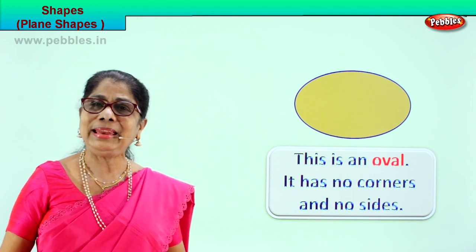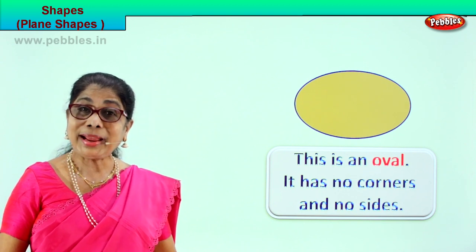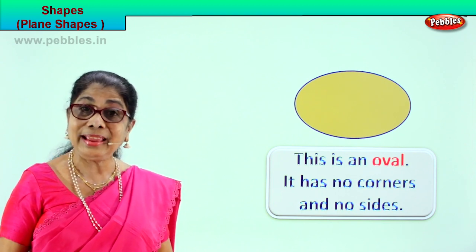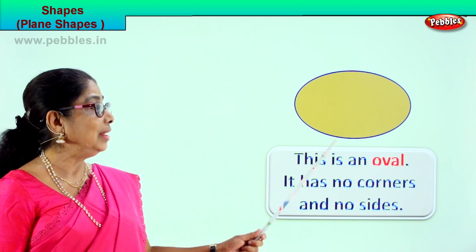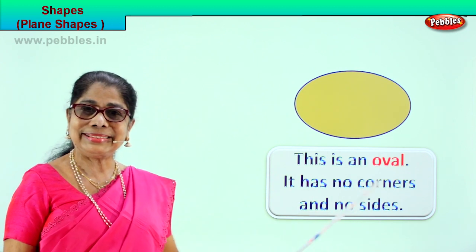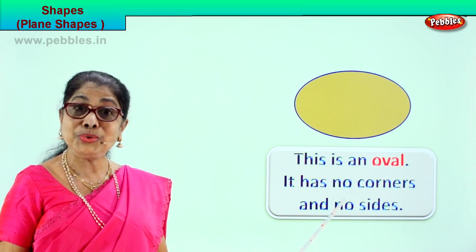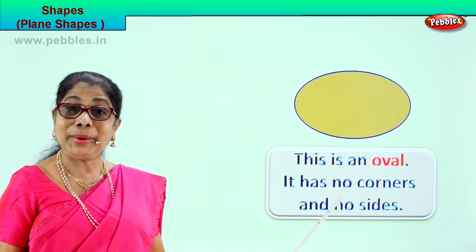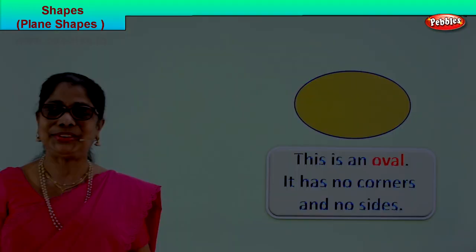So today we learnt plain shapes: rectangle, square, circle, oval, and triangle too. We learnt plain shapes.